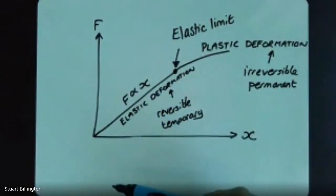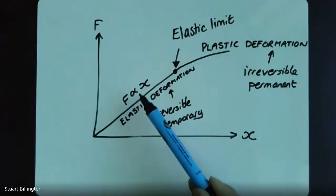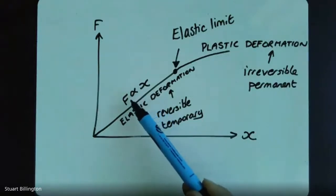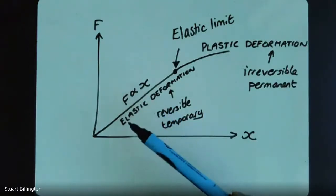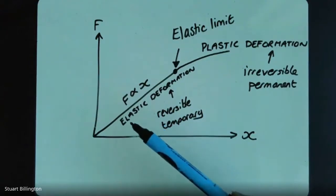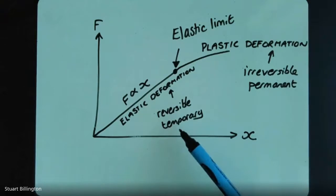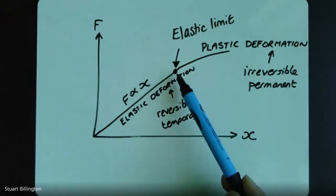So that's what we mean by elastic - we've got this proportionality, it's due to the atomic bonds stretching or shrinking, and when the force is removed equilibrium is once again restored. That's why it's reversible and only temporary. But those bonds can only stretch by so much.